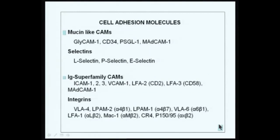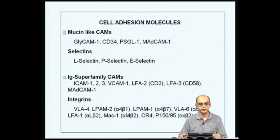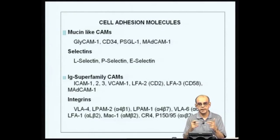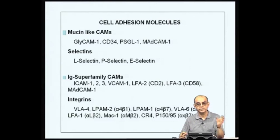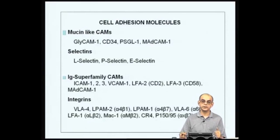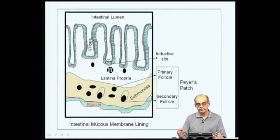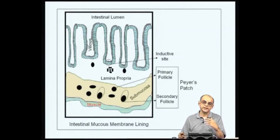To summarize the cell adhesion molecules: there are four different families — mucin-like, selectins, immunoglobulin superfamily, and integrins. These molecules take part in pairwise interactions with counterparts expressed on vascular endothelial cells as well as the lymphocytes that need to traffic specifically into certain lymph nodes.